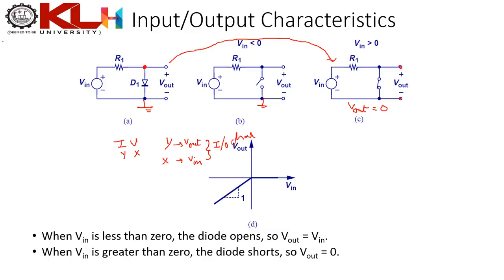When V_in is negative, the diode is reverse biased and we redraw the circuit with the diode open-circuited. In this case V_out = V_in directly. So the IO characteristic is: V_out = 0 when V_in > 0, and V_out = V_in (slope = 1) when V_in < 0.